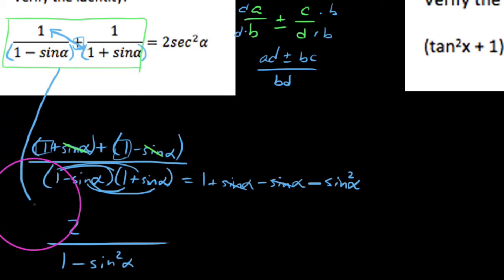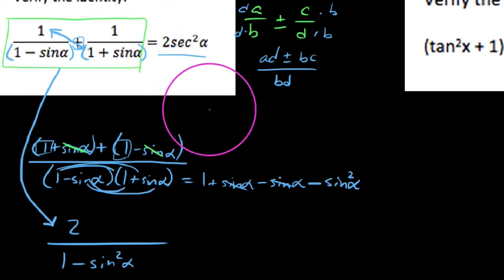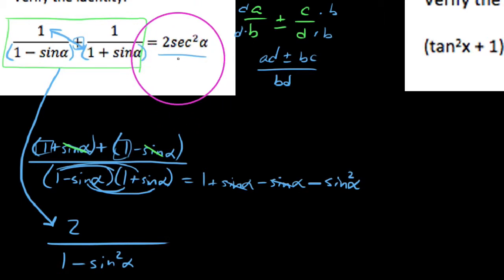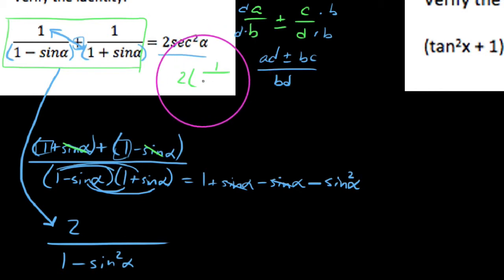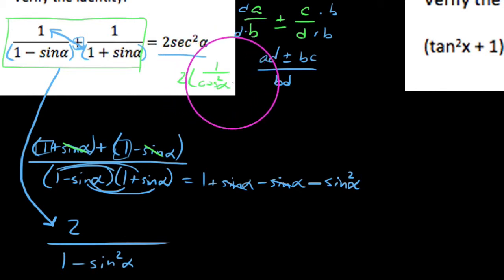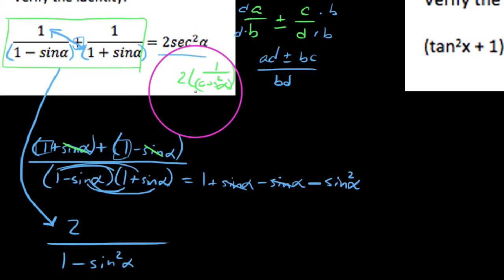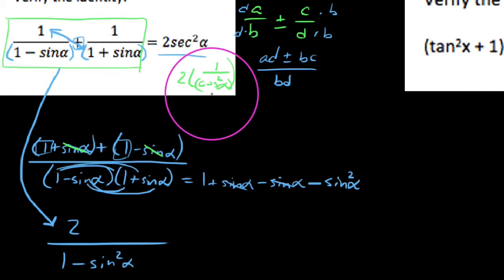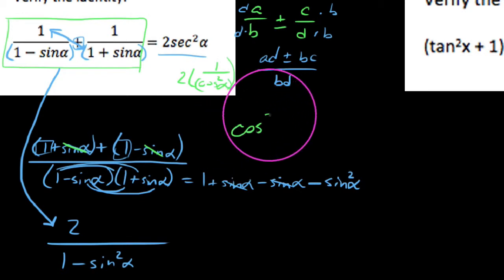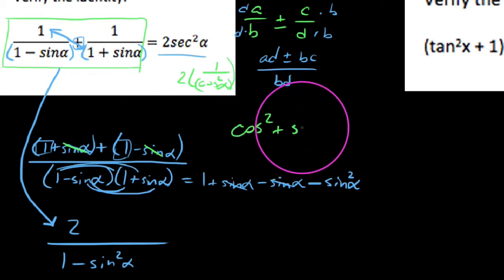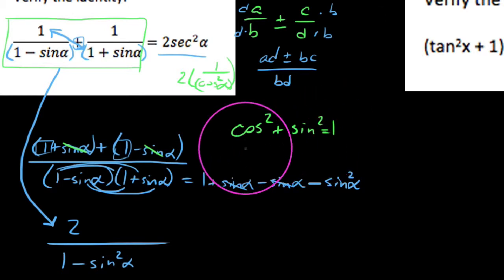Now what we've done is transformed the left-hand side into this expression. Keep in mind we are trying to prove that this equals 2 secant squared of alpha. Potentially looking at the right side, 2 secant squared of alpha would be the same thing as 2 times 1 over cosine squared of alpha. Notice when you have anything squared you might be dealing with something Pythagorean. For the million-gajillionth time, cosine squared plus sine squared is always 1.